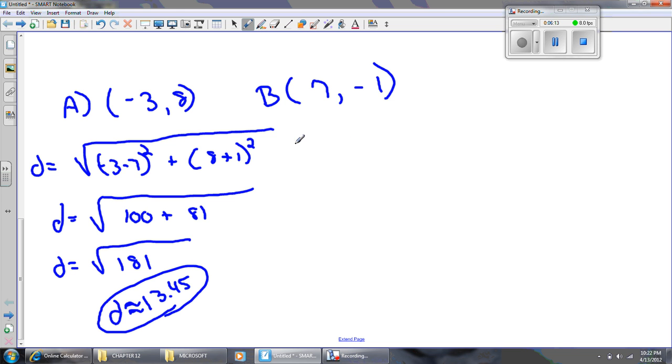What's the midpoint of segment AB? Well, for that, I need to average the x's, which would be negative 3 plus 7, divide by 2. And I need to average the y's, 8 plus negative 1, divide by 2.